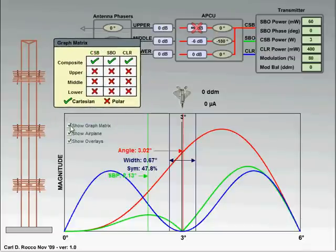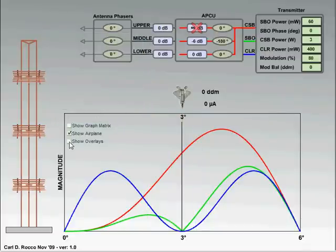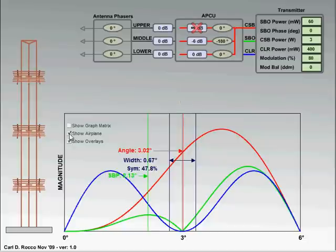Let me close down the graph matrix. We can hide or show that information, hide the airplane.